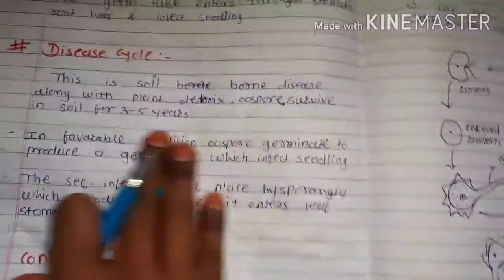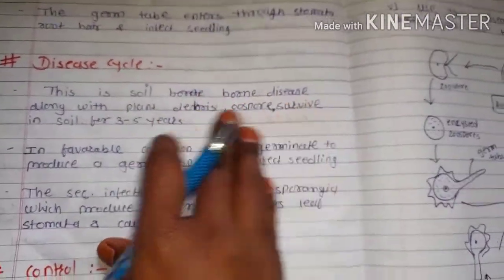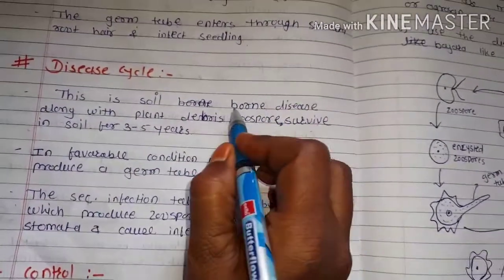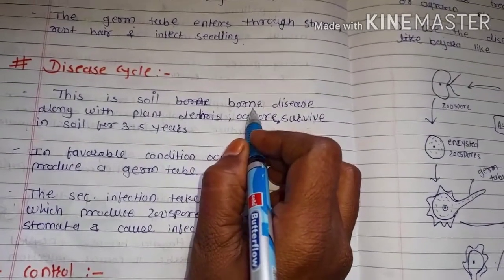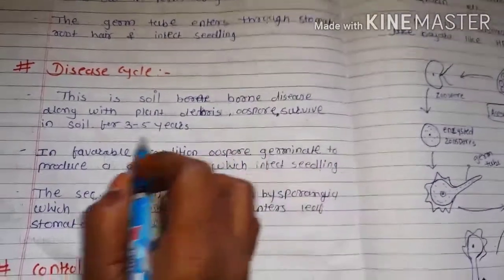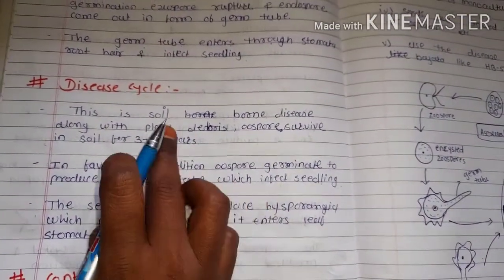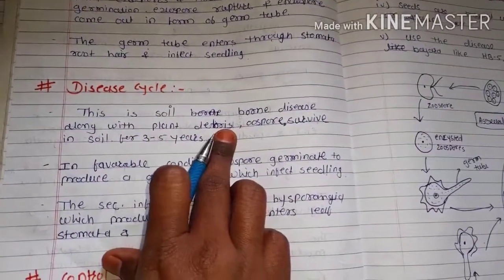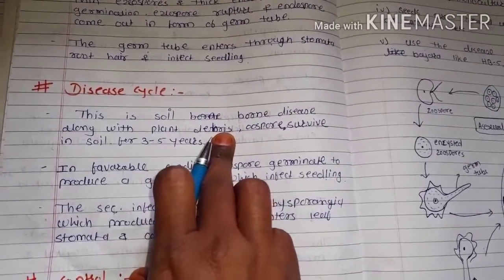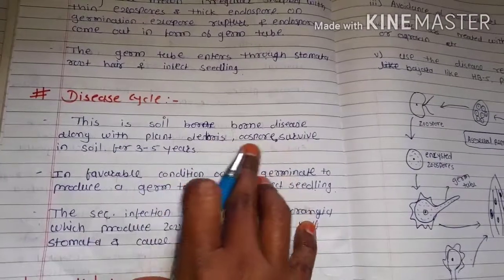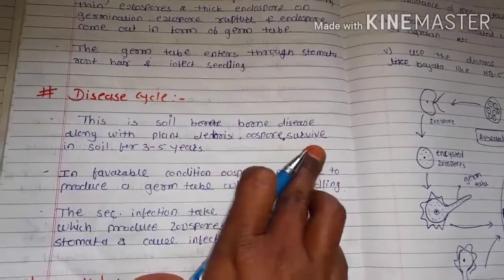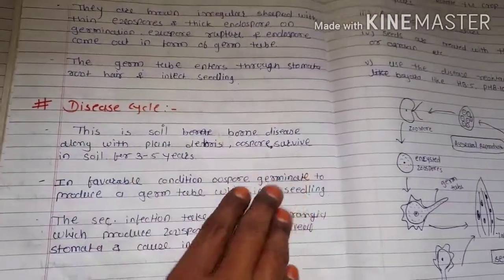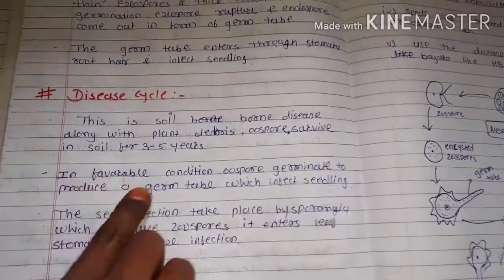Today we see the disease cycle. This is a soil-borne disease, meaning this fungal spore is present in the soil and can survive for about three to five years. It is also present in plant debris like roots and root remnants. The oospore structure of the spore survives in soil for about three to five years. The disease cycle is completed when favorable conditions are present.